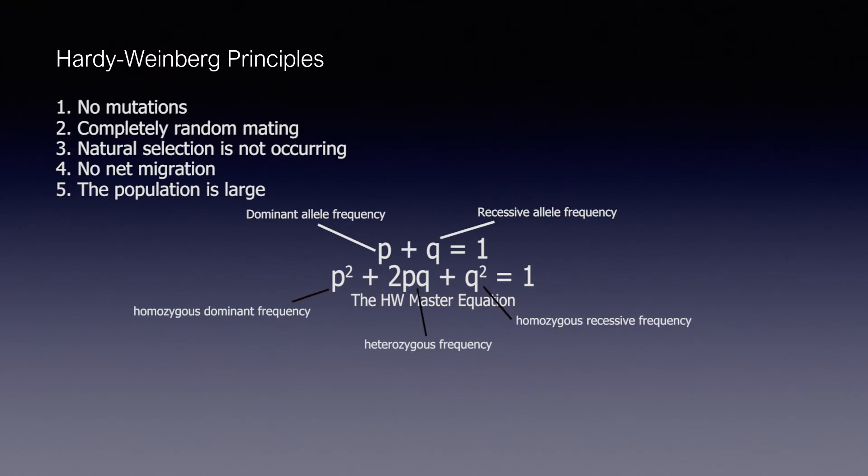It is important to know that when a population is in such equilibrium, the values of p and q do not change. The second equation can be used to calculate more in-depth calculations of specific genotypes.